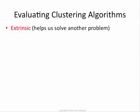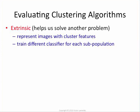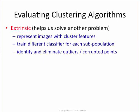With extrinsic evaluation, you're clustering the data not just to understand its makeup, but to use the clustering to help another algorithm — maybe help your classifier. Examples include representing images using clusters, training a different classifier in each cluster, or eliminating outliers using clusters. In all of those cases, the measure of how good the clustering is: you do the clustering, then you run your classifier, and see if your classifier with clustering is better than without. That's a way to figure out if your clustering is any good, and you can use that to pick the right value of k.